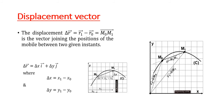So, what is the expression of delta r? It equals delta x i plus delta y j, where delta x equals the difference between the two abscissas, and delta y is the difference between the two ordinates. So, delta x equals x1 minus x0, and delta y equals y1 minus y0.